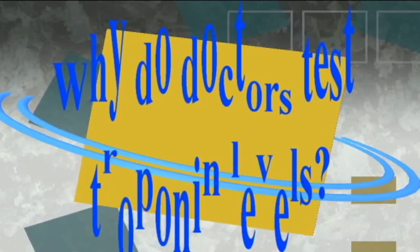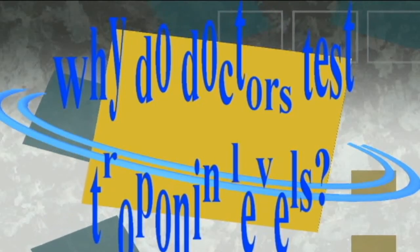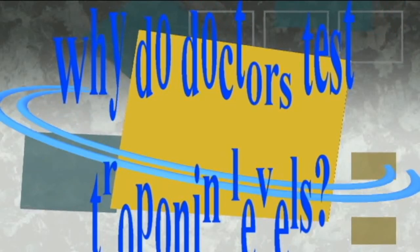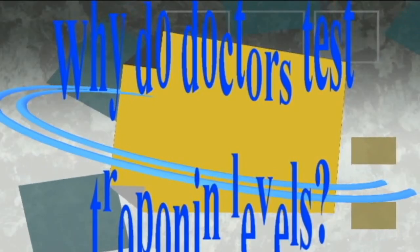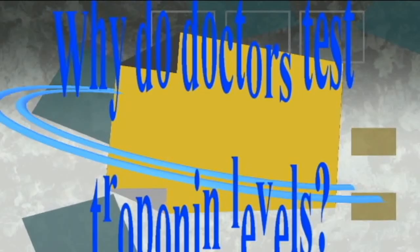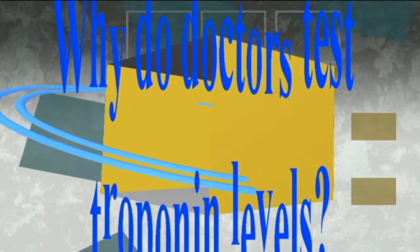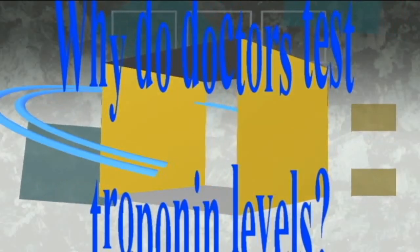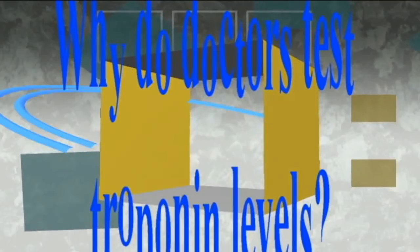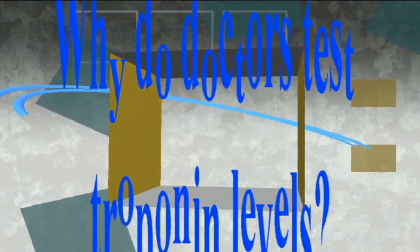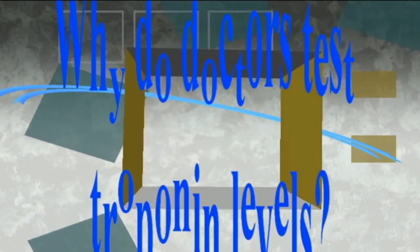Laboratories measure troponin in nanograms per milliliter of blood. The University of Washington's Department of Laboratory Medicine provides the following ranges for troponin I levels: normal range below 0.04 nanograms per milliliter of blood, probable heart attack above 0.40 nanograms per milliliter of blood.